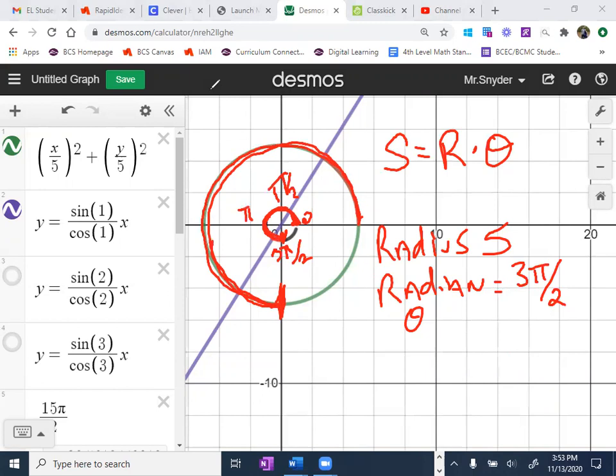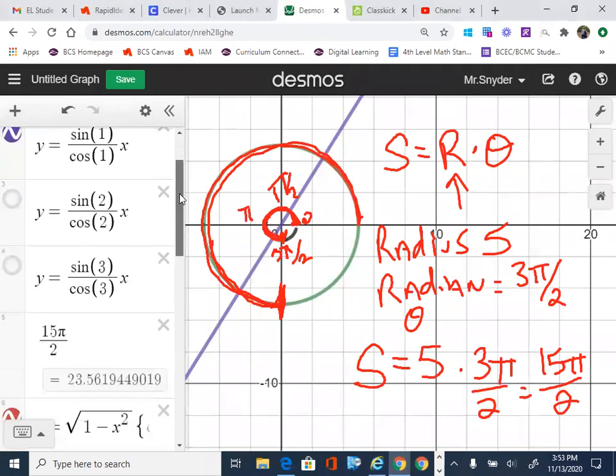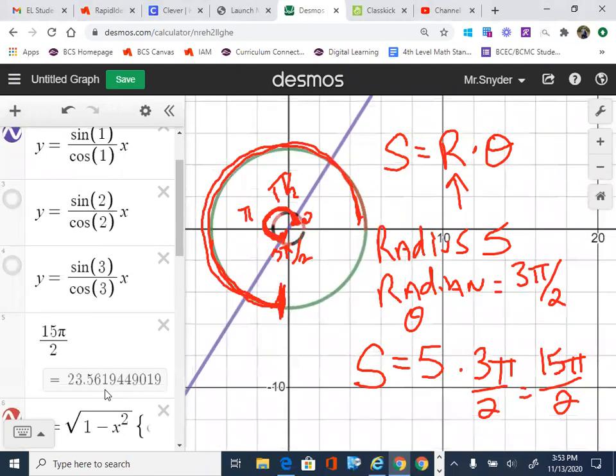So in order to figure this out, we just say our arc length, which is going to be based on our radius, which is five, times our radian, three pi over two, and we just multiply: 15 pi over two. Now, what does that mean in normal terms so people understand that? Well, 15 pi over two is approximately 23.56.